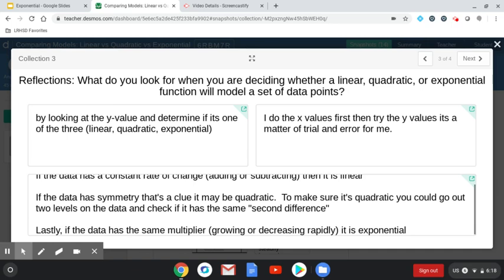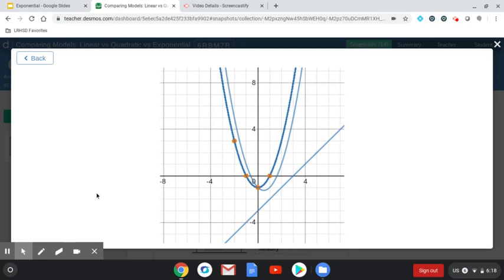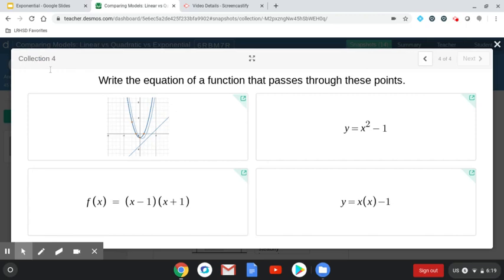The next Desmos one that I wanted to show you was this screen where you had to write an equation of the function that passed through these orange points. So you can see whichever student did the linear one forgot to put the x squared to make it quadratic. But all these other students that are kind of close to overlapping those orange points are definitely on the right track with a quadratic.